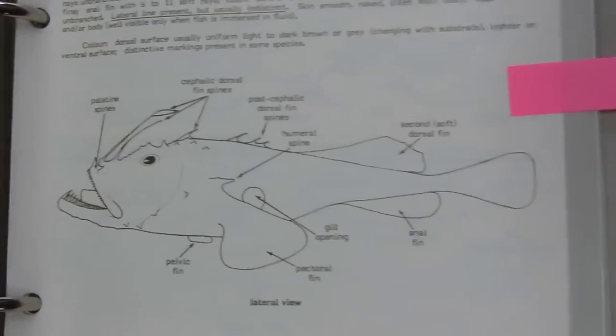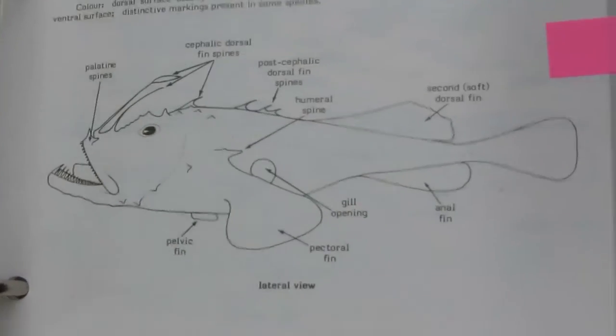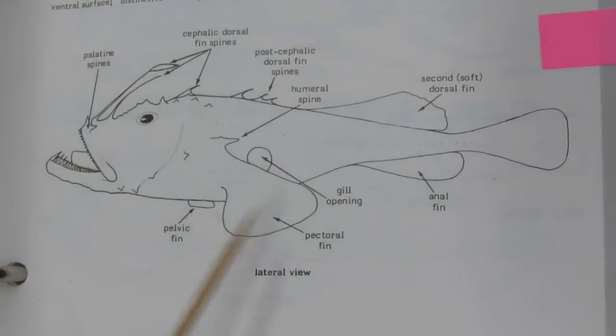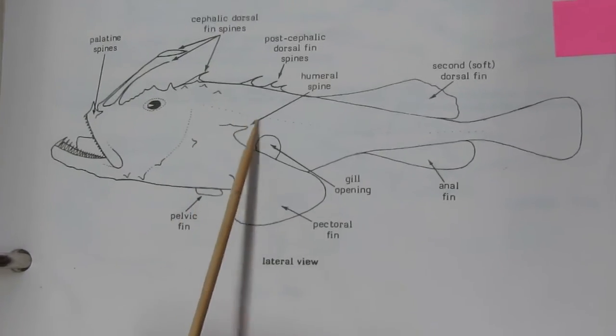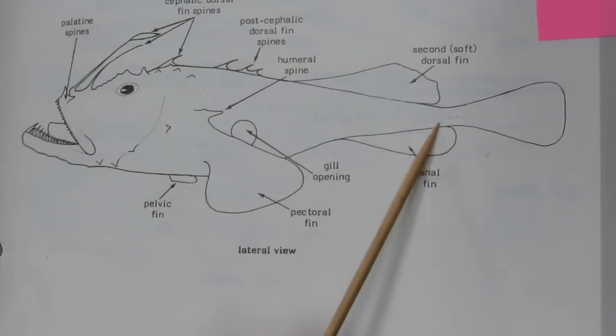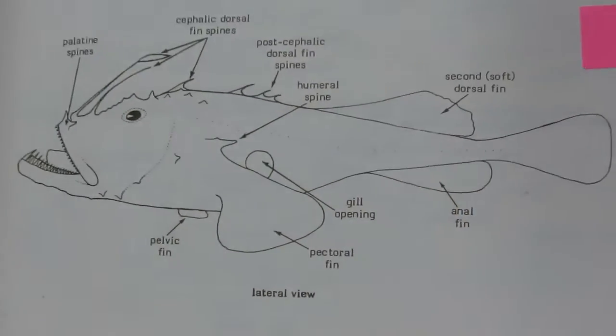Next is Lophiidae. The lateral line is present but usually indistinct — an indistinct type of lateral line.